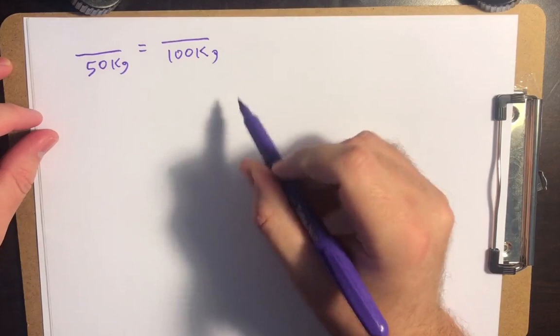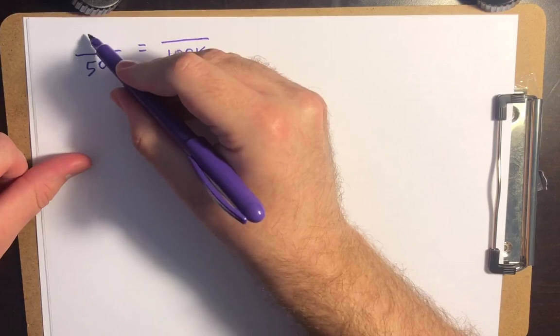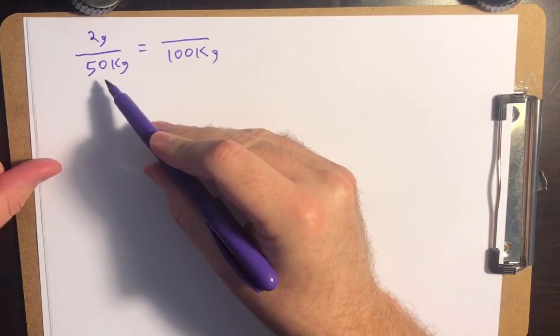Let's say that you have two patients. One of them is 50 kilograms and the other one is 100 kilograms. If the standardized dose for a patient of 50 kilograms is two grams of hypothetical medication, then because this person is twice as big, you would go ahead and just give them four grams of that medication.